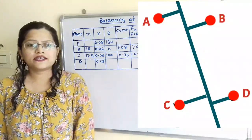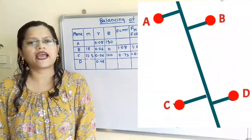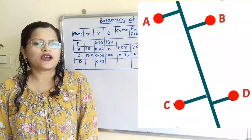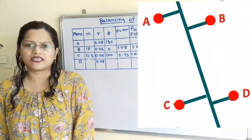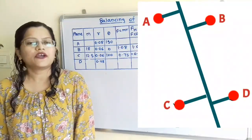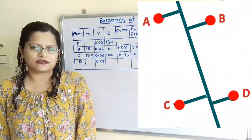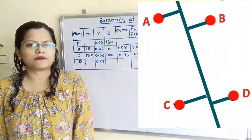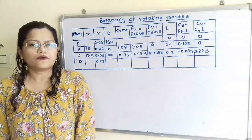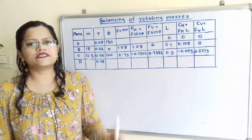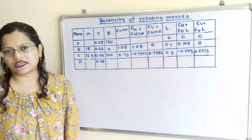In this question, 4 masses A, B, C, and D are rotating in different planes about the same shaft and are dynamically balanced. To solve the question by the analytical method, we are going to fill up a table as per the given data.